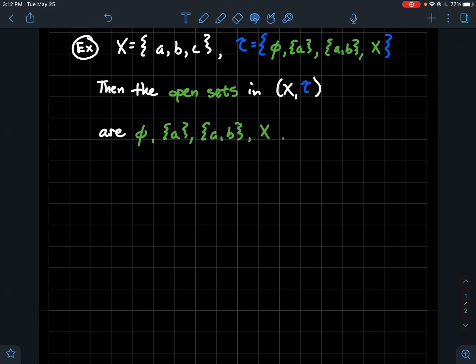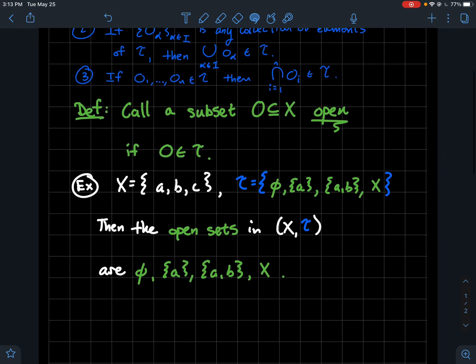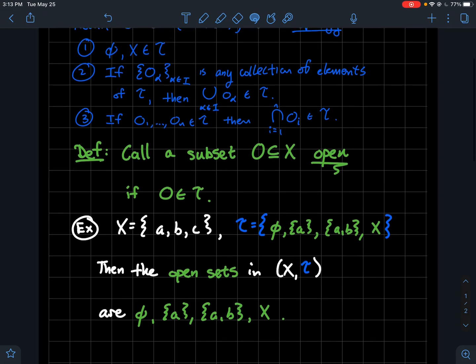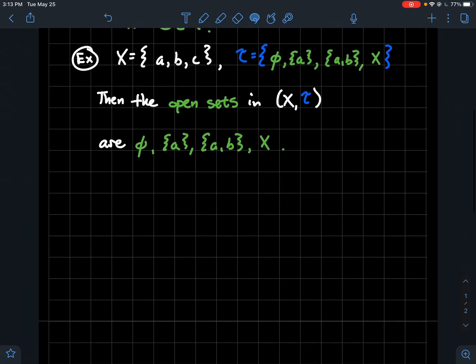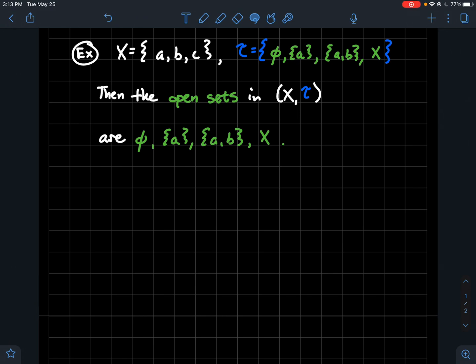So the open sets again they're just the things that are in T. And you can think about why does this T satisfy the blue properties above? Maybe check it out, make sure it does. But anyway, just the things, the subsets that are in T are just what we're going to describe as open. So that's just how we're using that adjective.